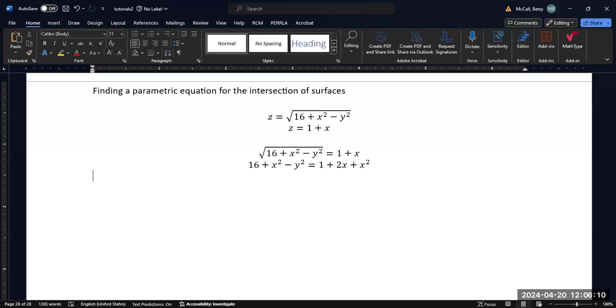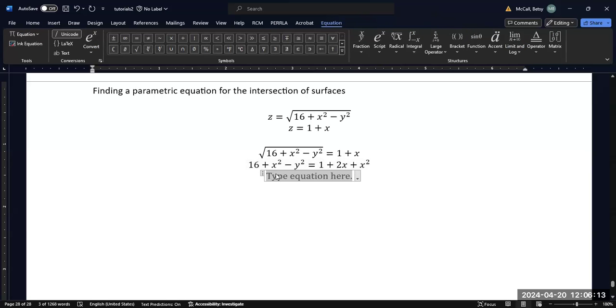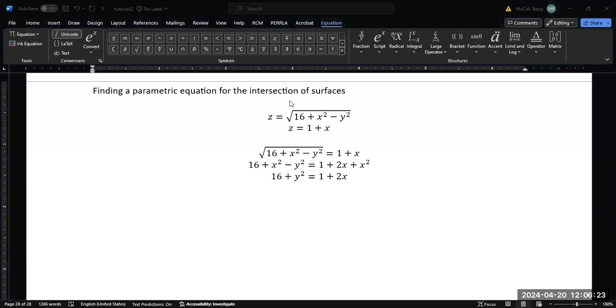We can see that our x squared are going to cancel. And so now what I'm going to try to do is solve for one of my variables. Which one you end up solving for is just going to depend on how the algebra works out, but in this case I have an x that is linear and an x squared that is not, so I'm going to solve for x.